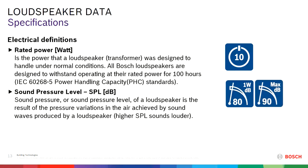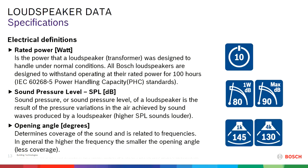Sound pressure level — you will see two icons here on the right. The sound pressure level of the loudspeaker is the result of pressure variances in the air achieved by sound waves from the loudspeaker. The higher the SPL, the louder it sounds. You'll see two icons: one says 1W dB and Max dB — we're going to talk about what those mean. Opening angles determine the coverage of the sound below or in front of a loudspeaker. In general, the higher the frequency, the smaller the opening angle gets — the more directive a loudspeaker will become.